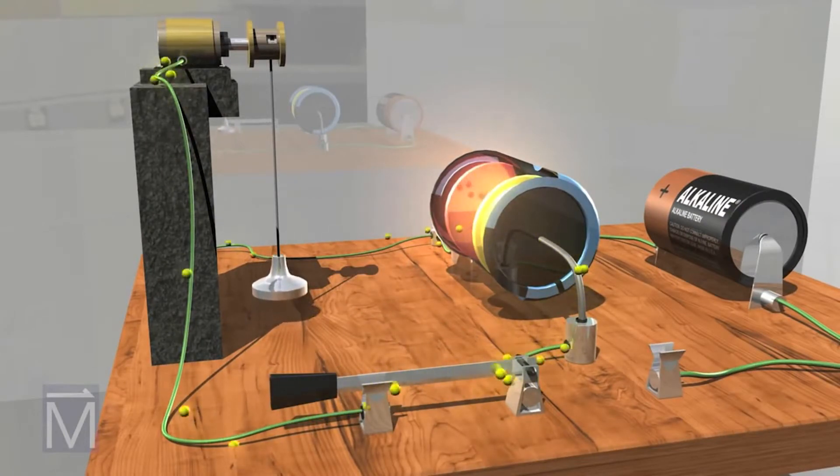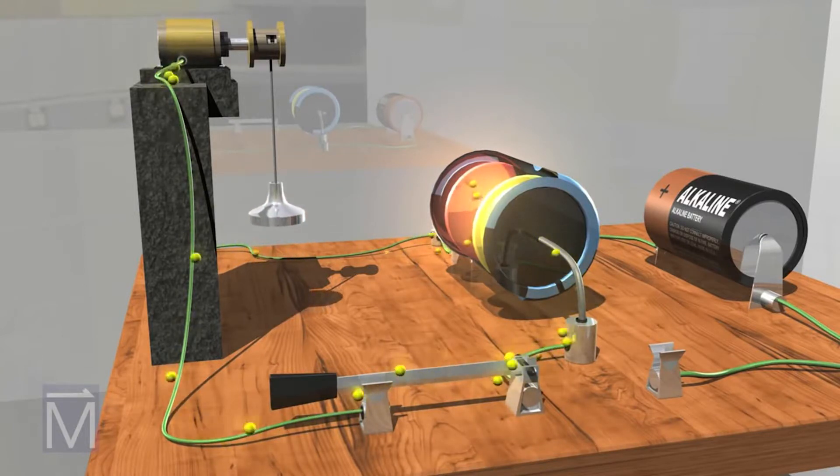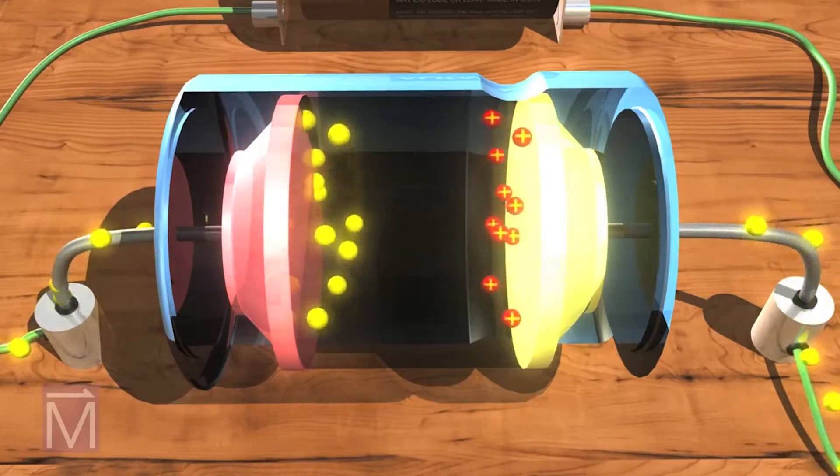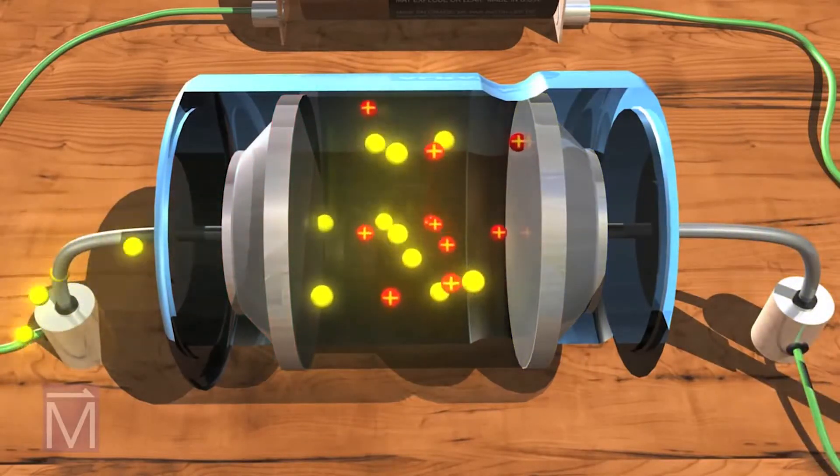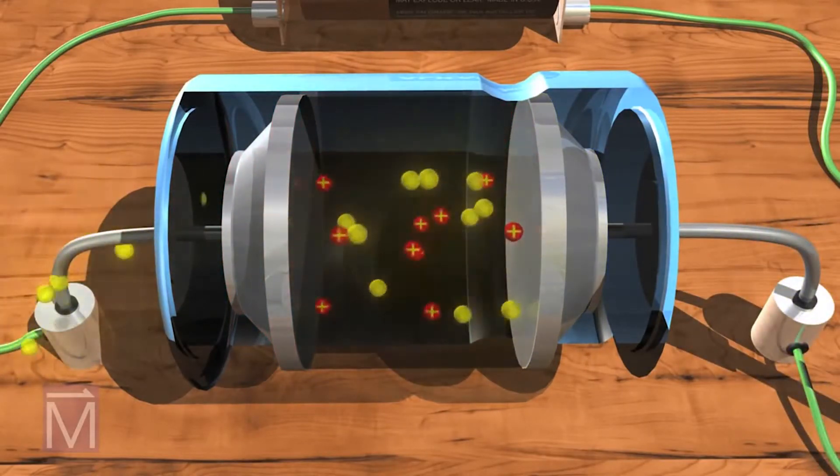This electrical current powers the pulley to lift the weight until the charge dissipates. The electrons on the capacitor's negative terminal are drawn to its positive terminal. They rush along the path that leads there, straight through the motor.